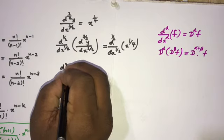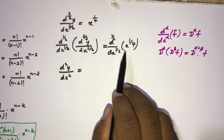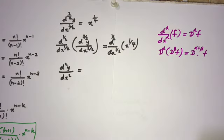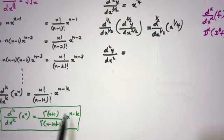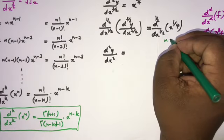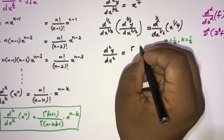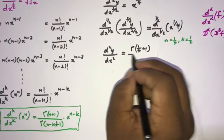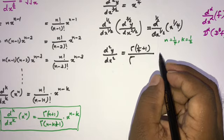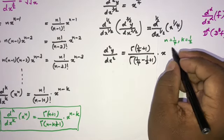Therefore we can write: d²y/dx² = D^(1/2)(x^(1/4)). Applying the general formula with n = 1/4 and k = 1/2, we get: Γ(n+1)/Γ(n-k+1) · x^(n-k) = Γ(1/4 + 1) / Γ(1/4 - 1/2 + 1) · x^(1/4 - 1/2).